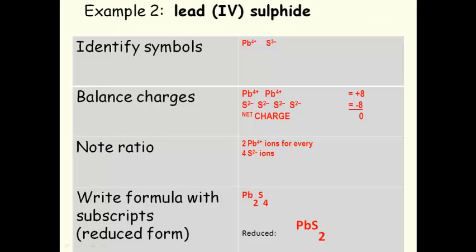Example 2: lead (IV) sulphide. First, identify the symbols. Lead is Pb4+, but on the periodic table, it's also Pb2+. The way we know we're supposed to use this one is from the name. Our name rule 4 tells us to use ion charge 4. Sulfide, which is actually S2-, is the only ion charge for sulfur.